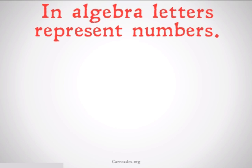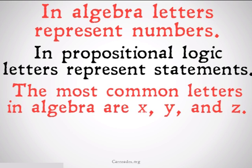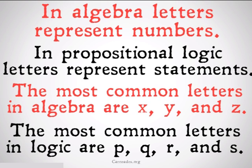In algebra, letters represent numbers, but in propositional logic, letters represent statements or sentences. In algebra, the most common letters used are x, y, and z. In propositional logic, the most common letters used are p, q, r, and s. Each letter represents a statement — a sentence with a subject and a predicate.